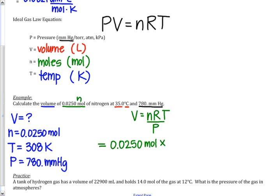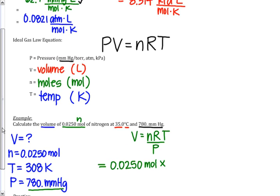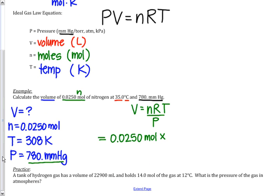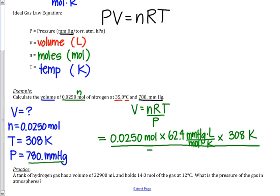The R value, this is the trickiest part. This decision that you have to make, you want to look at your pressure value. Since pressure was given at millimeters of mercury, the R value you want to use is 62.4 since it has millimeters of mercury in it. So we're going to use 62.4 millimeters of mercury liters divided by mole K. That's just its complicated label. The temperature is 308 Kelvin. And the whole thing is going to get divided by the pressure of 780 millimeters of mercury.